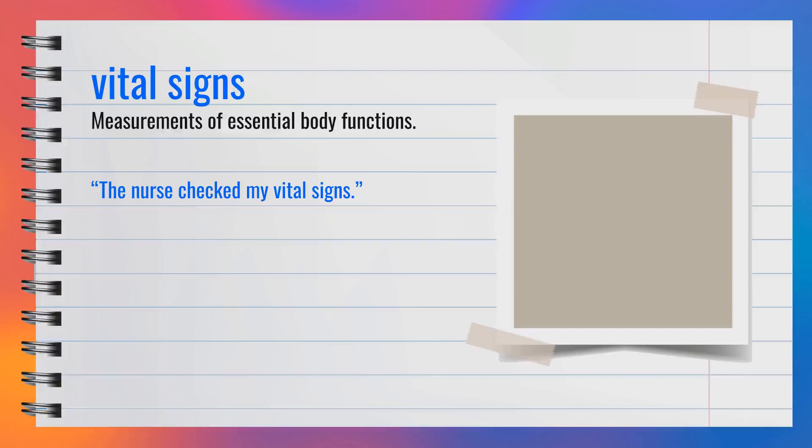The term vital signs, spelled V-I-T-A-L-S-I-G-N-S, is a noun. It refers to measurements of essential body functions. Examples of vital signs include heart rate and blood pressure. For instance, the nurse checked my vital signs. In summary, vital signs are measurements of essential body functions.